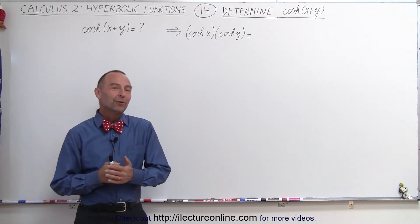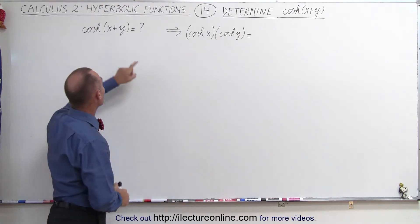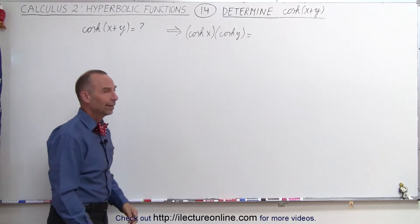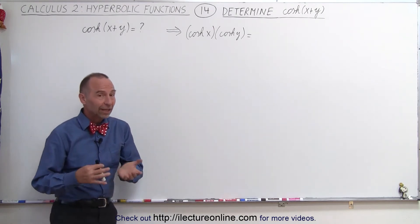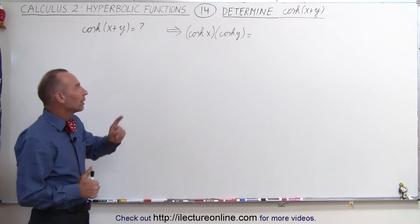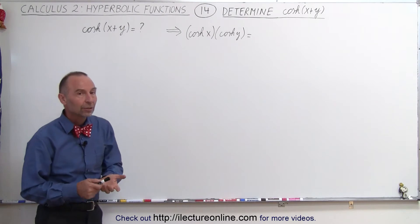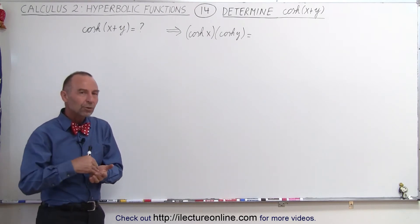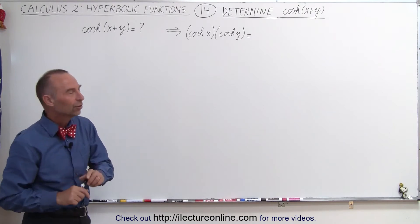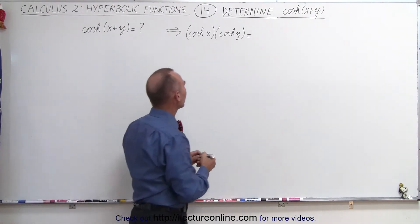Welcome to ElectronLine. For our next identity, this is kind of a handy identity — we're going to try to determine the hyperbolic cosine of x plus y. We know that with trigonometric identities that comes in quite handy. The approach we're going to take is the following: we're first going to solve for the product of the hyperbolic cosine of x times the hyperbolic cosine of y, and then we're going to do it again for the hyperbolic sine of x times the hyperbolic sine of y, to see what we get. So let's do that.